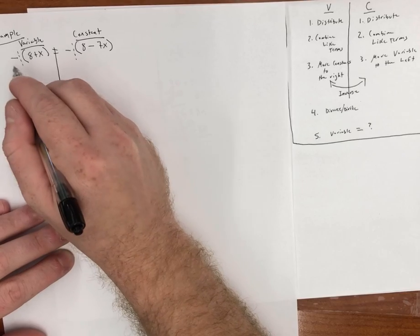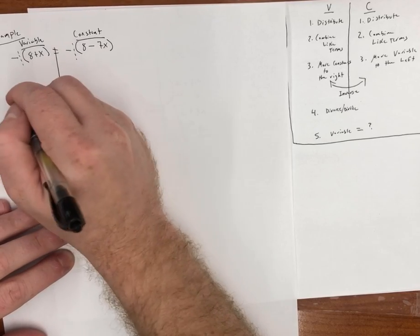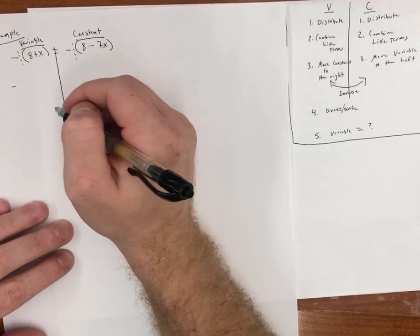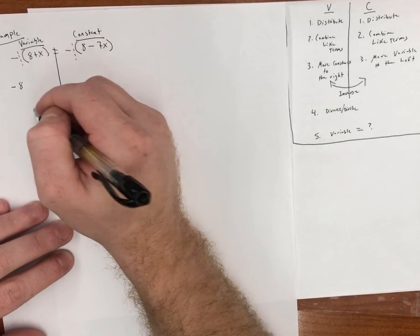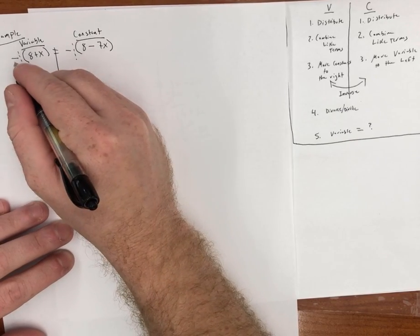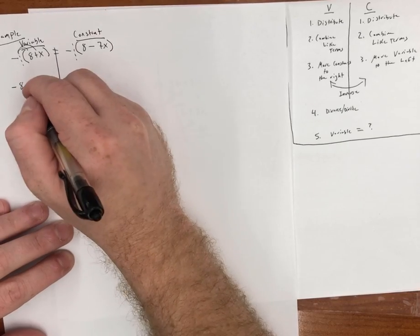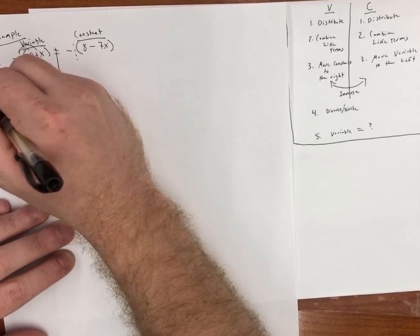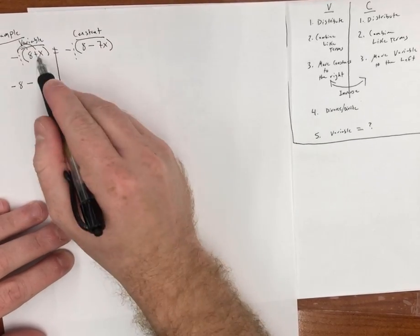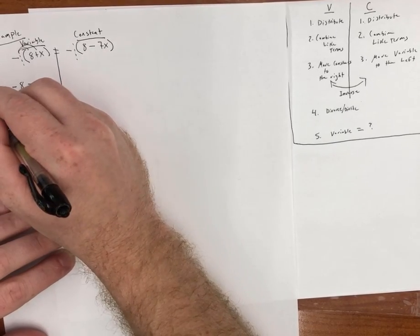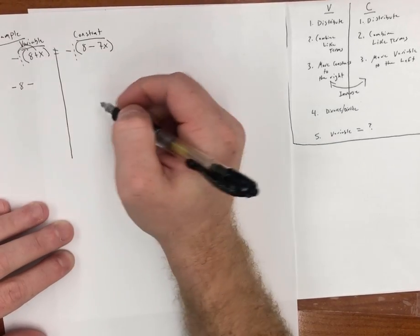Let's go ahead and start with the signs. I have a negative times a positive, which is going to give me a negative. 1 times 8 is going to give me 8, and now let's do it again. Negative times a positive is going to give me a negative. Remember, if you need to remember the triangle, plus minus minus, I have a positive times a negative, which is going to be a negative answer.